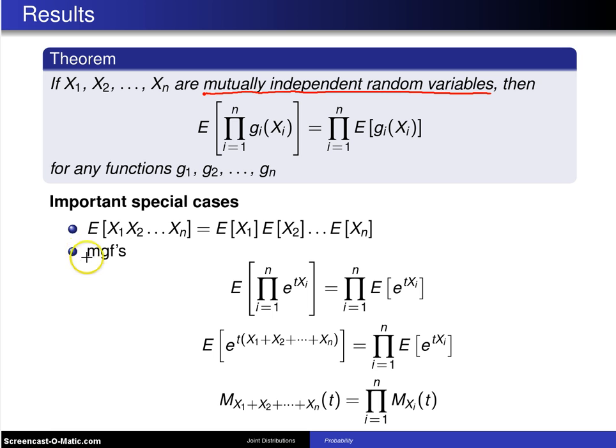The second important special case concerns moment generating functions. Let's say these functions g_i(X_i) happen to be e^(tX_i). When that's the case, you can write the theorem above in the following fashion.